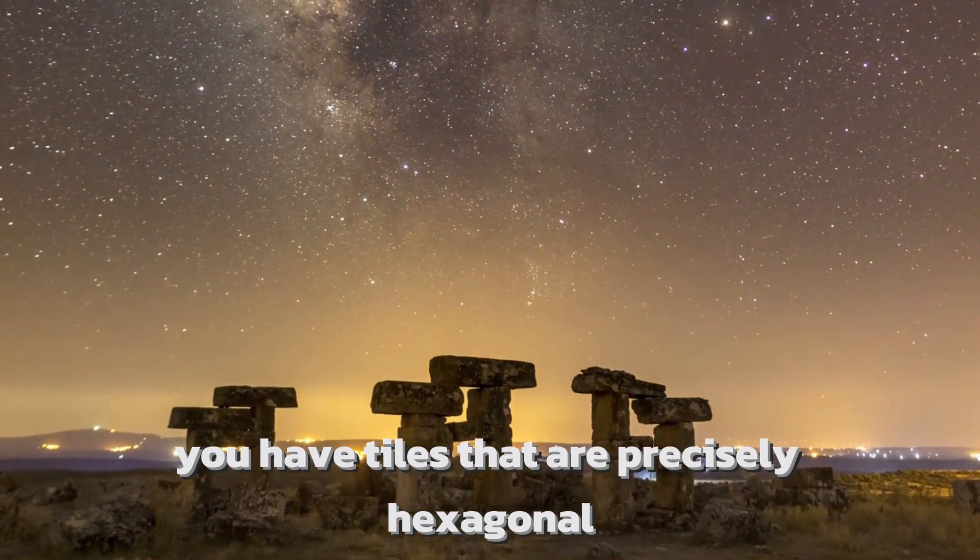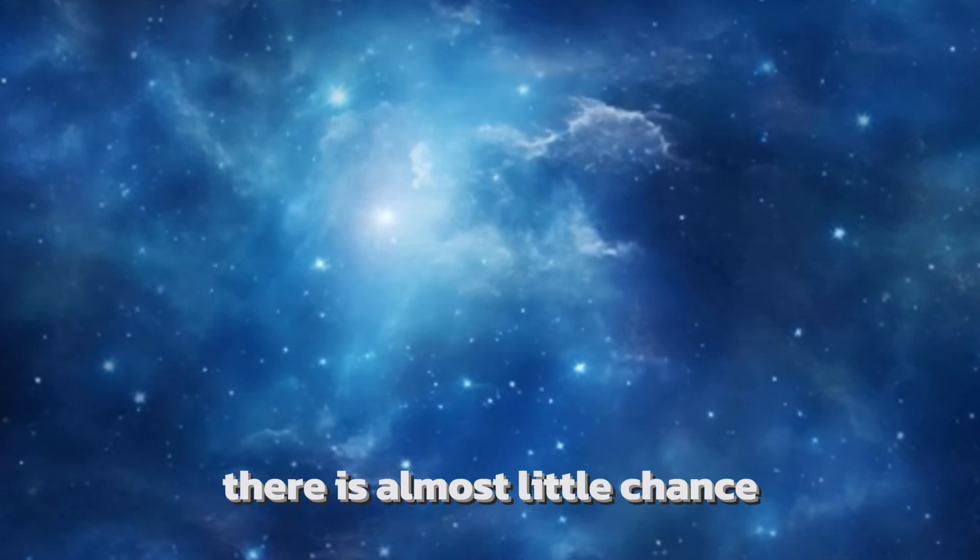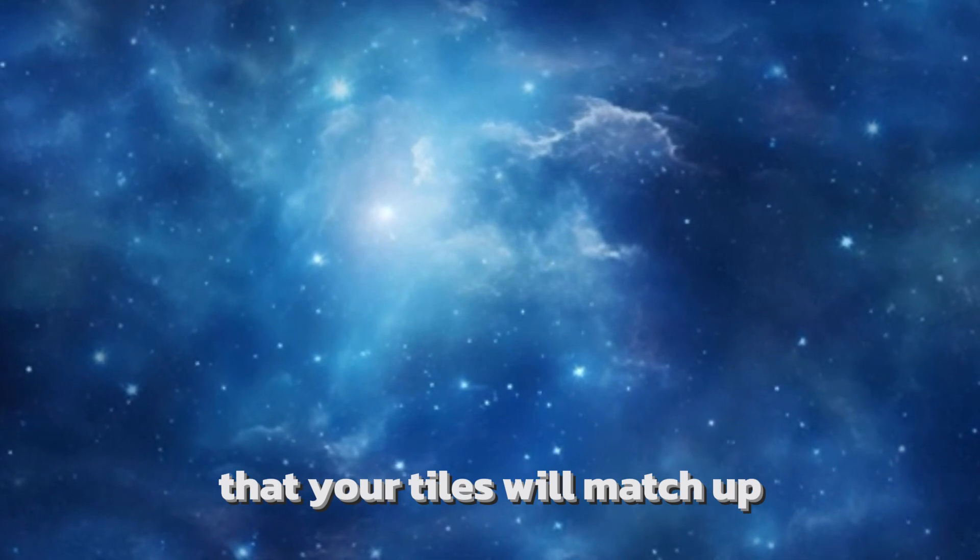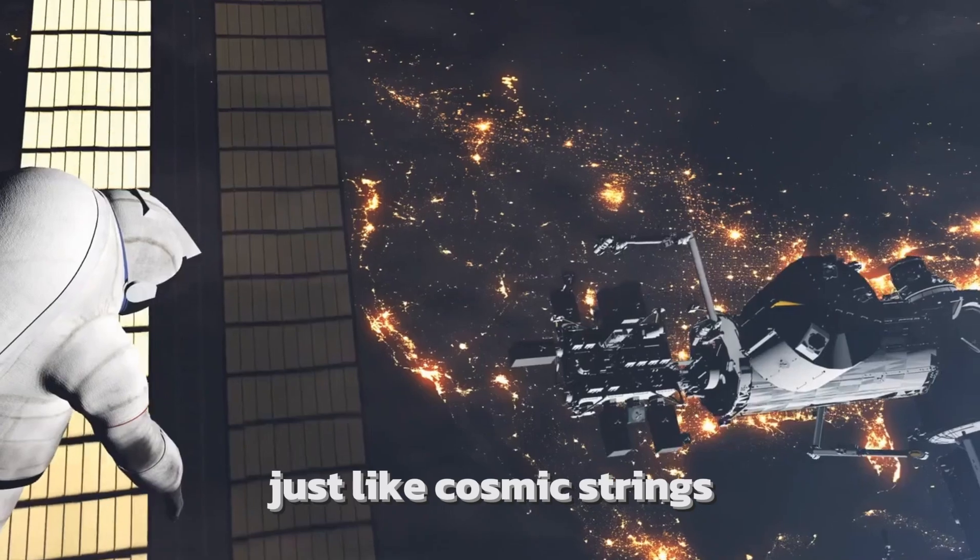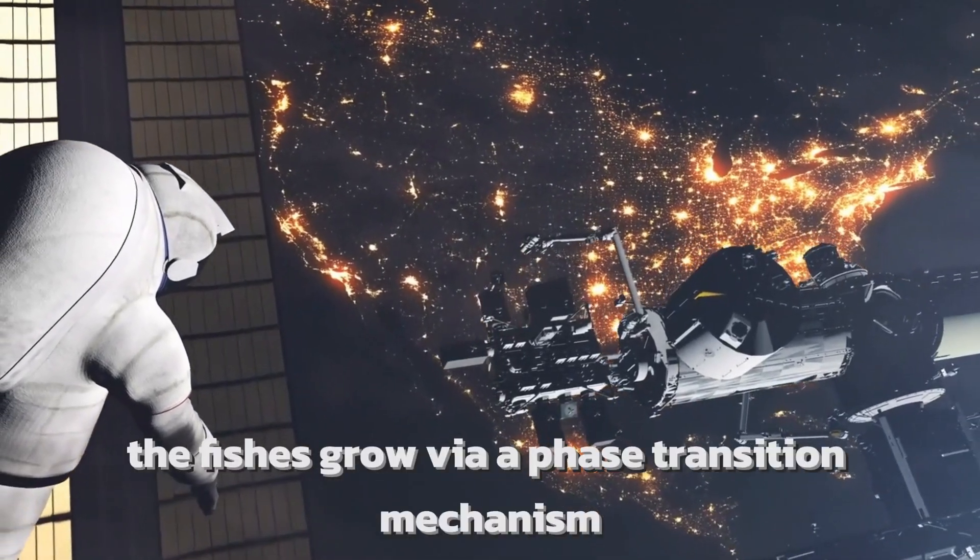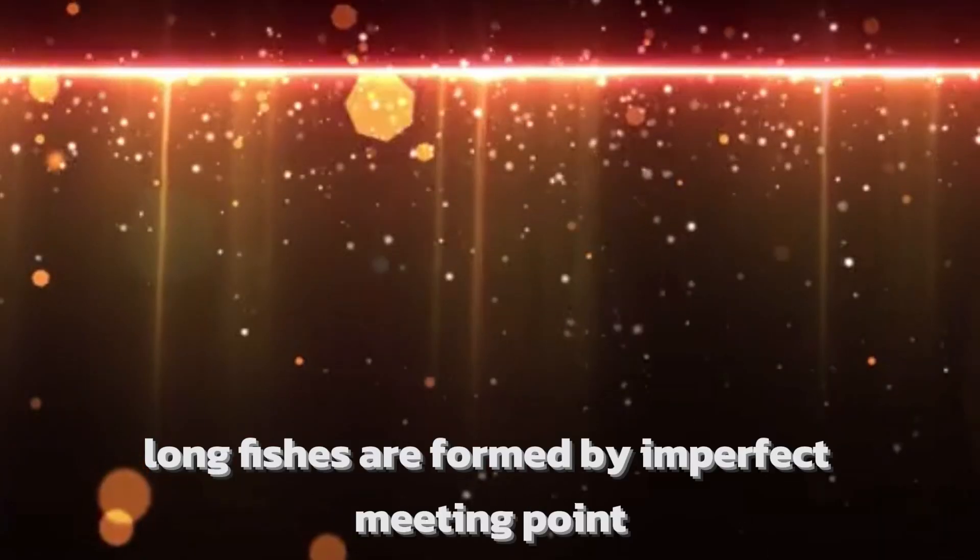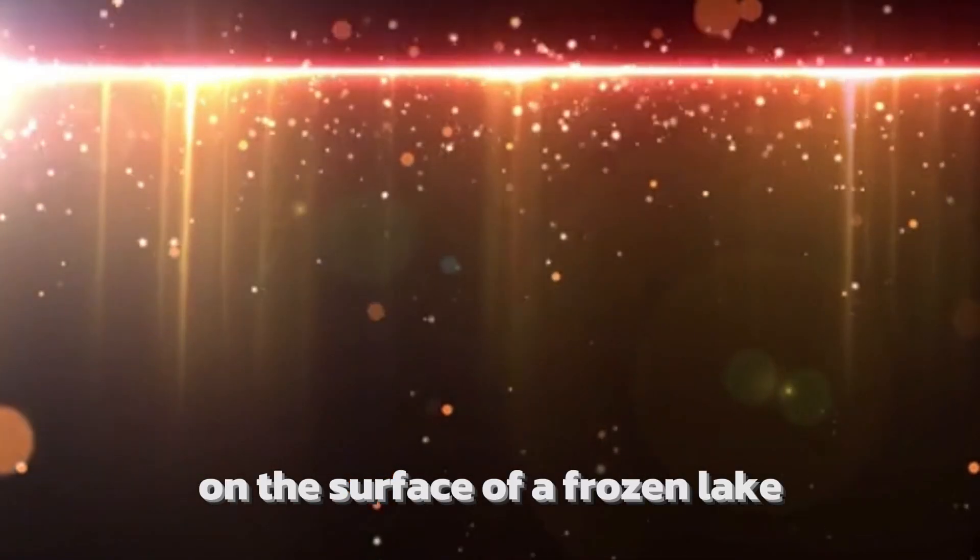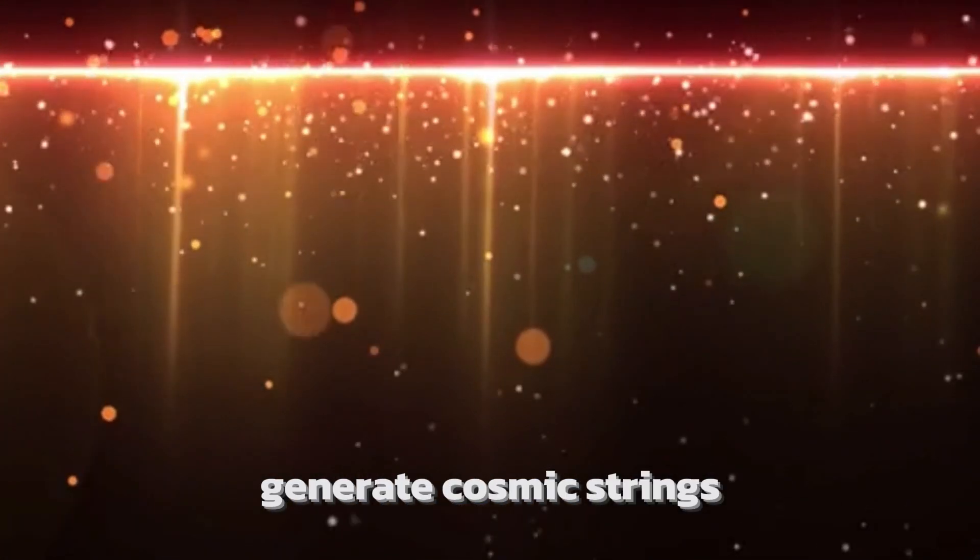"Picture this: you have tiles that are precisely hexagonal, and you tile the lake with them. There is almost no chance that your tiles will match up if someone on the opposite side of the lake starts to tile again. Just like cosmic strings, the fissures grow via a phase transition mechanism. Long fissures are formed by imperfect meeting points on the surface of a frozen lake. These, in the fabric of space-time, generate cosmic strings."